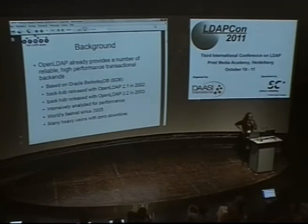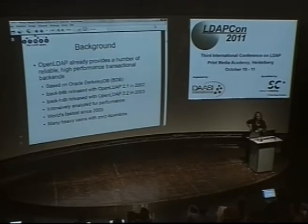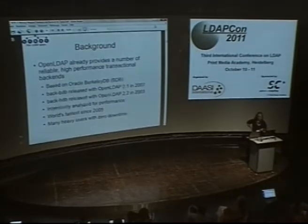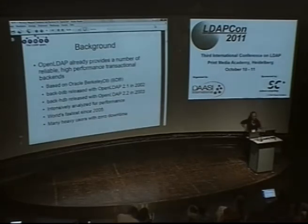OpenLDAP has been using Berkeley DB since we first started working on the BackBDB back-end in 2001, with the first public release in 2002. That corresponds with when Netscape asked Sleepy Cat to produce Berkeley DB version 2.0, around the 2000–2001 timeframe. We've profiled it intensely and benchmarked it intensely. It's been the world's fastest LDAP directory for a number of years. We have many large corporate clients who bought support contracts from us in 2005 that have yet to log a trouble ticket.